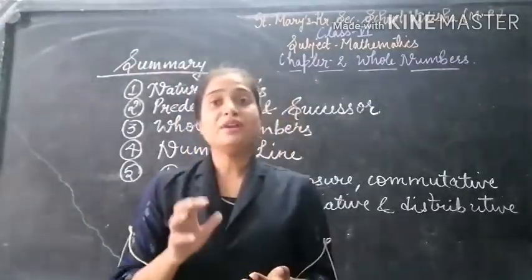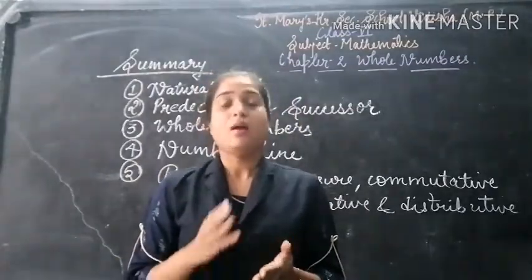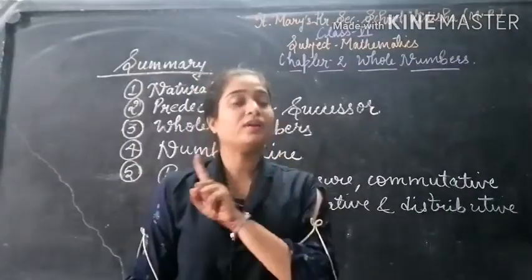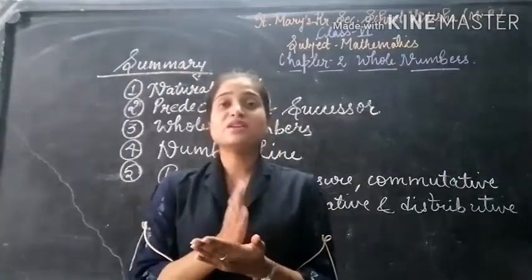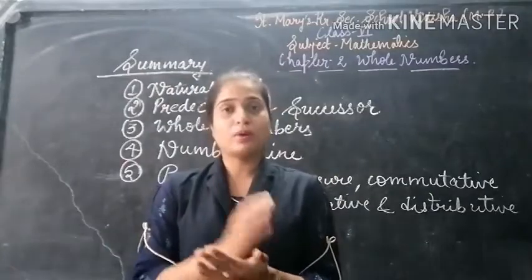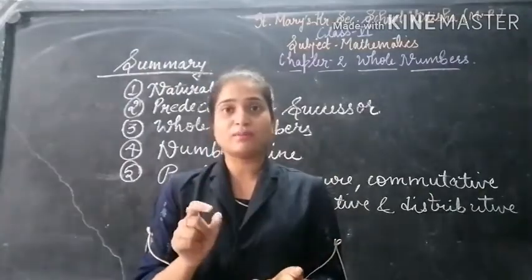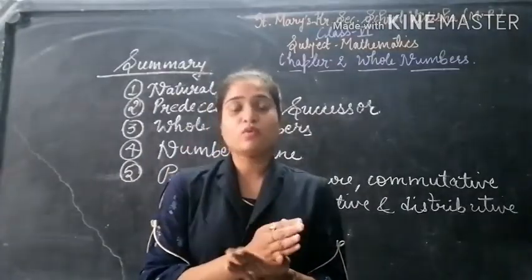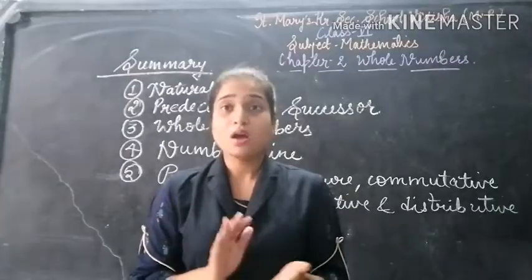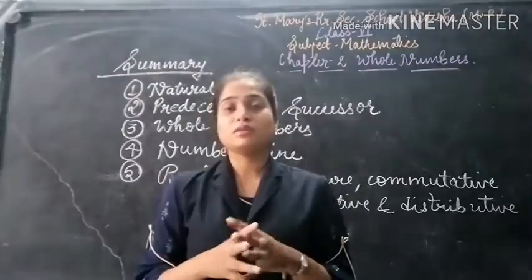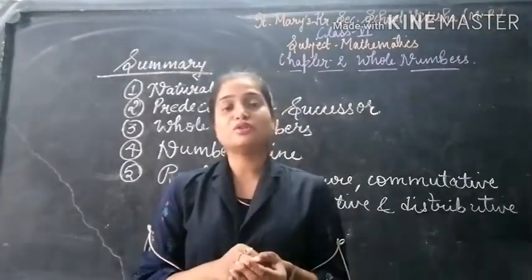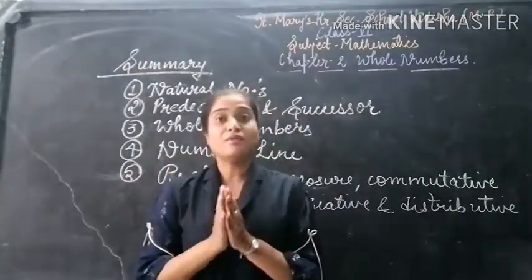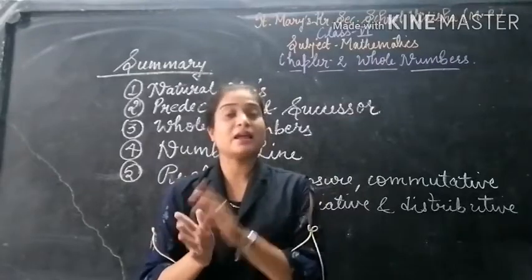But every natural number does not have a predecessor, because all numbers have a predecessor except 1. The predecessor of 1 would become 0. Why? Because we subtract 1 from the given number, and 1 minus 1 gives 0. But 0 is not a natural number; 0 is a whole number. Natural numbers start from 1 onwards. So every natural number has a predecessor except 1.